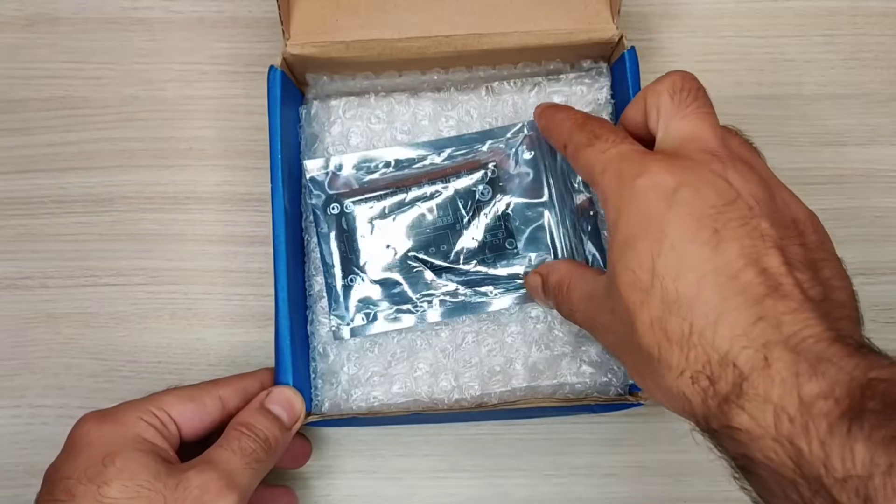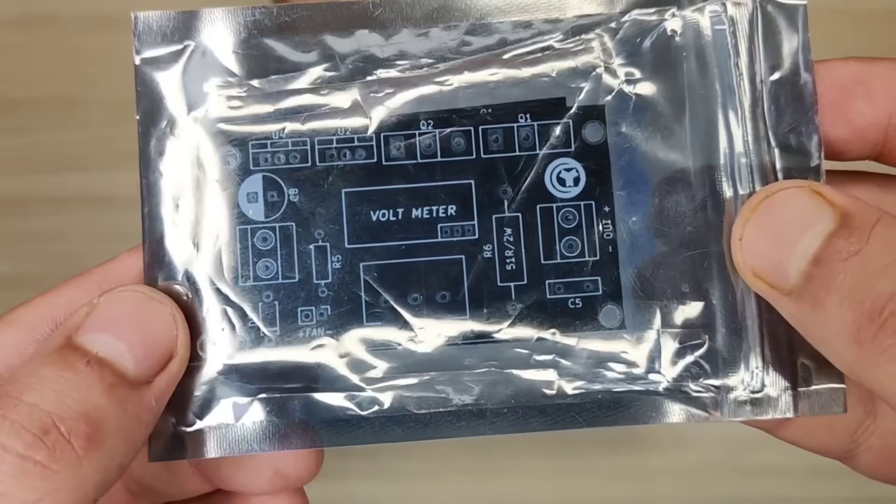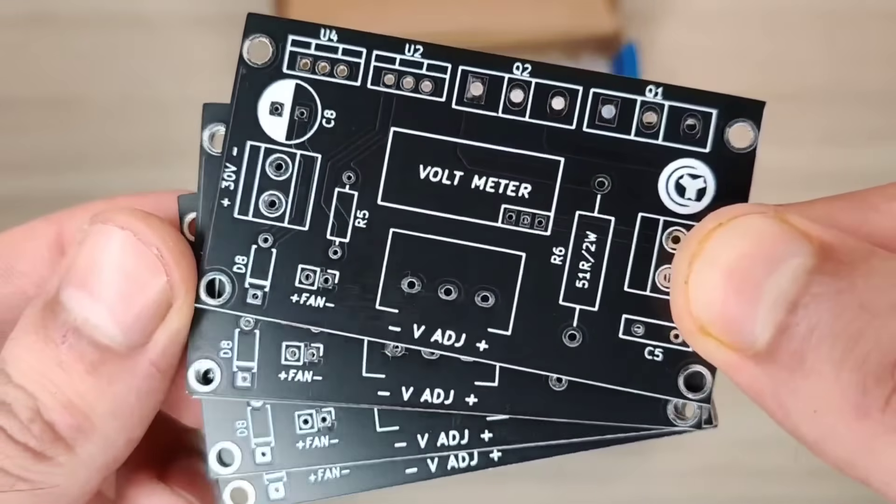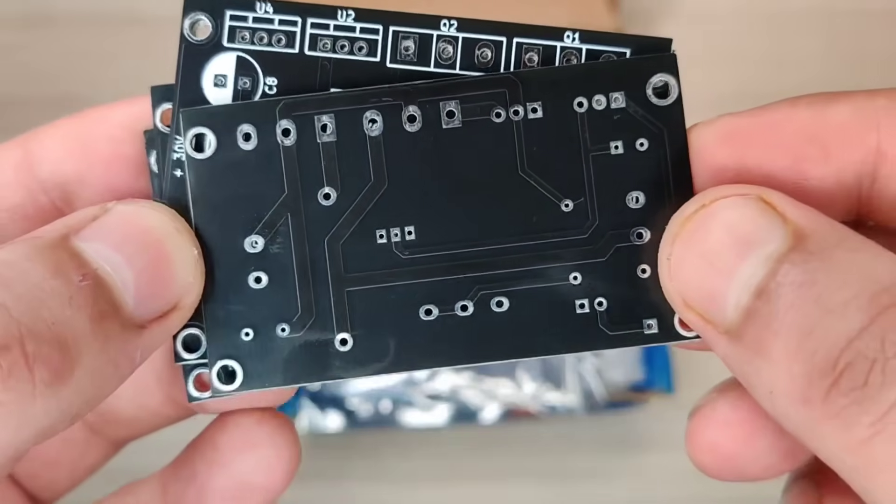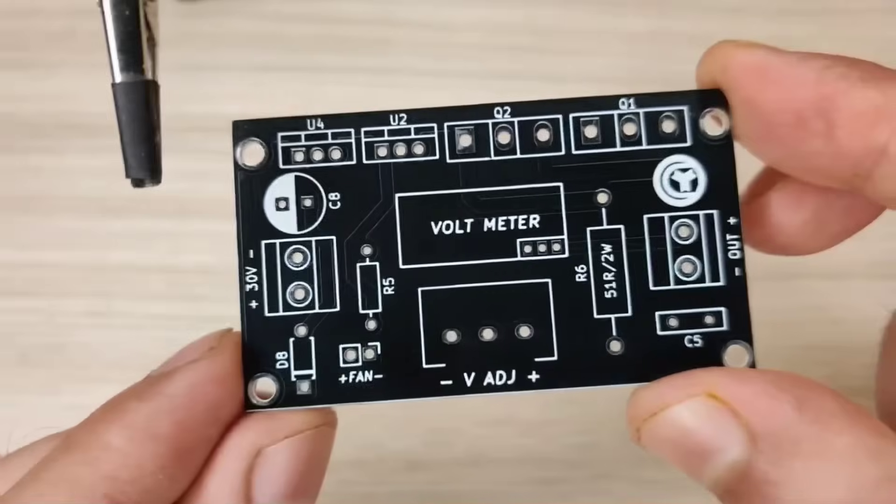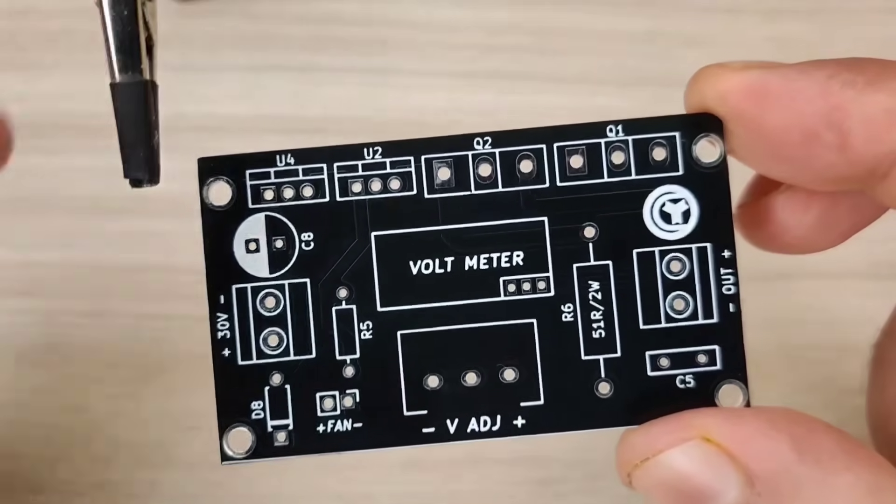For easy assembly I ordered the PCBs from JLCPCB. Get 1 to 8 layer PCBs for just $2. Efficient large scale production reduces costs, bringing you PCBs at unbeatable prices. And then I prepared the PCB for its components.